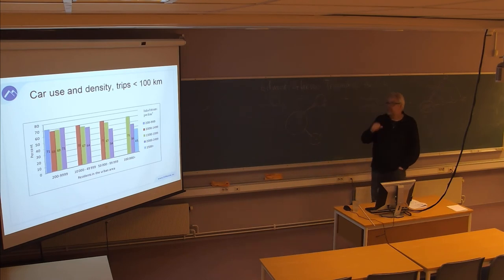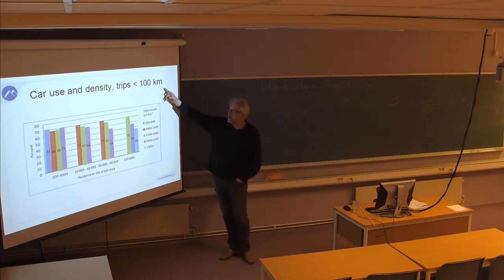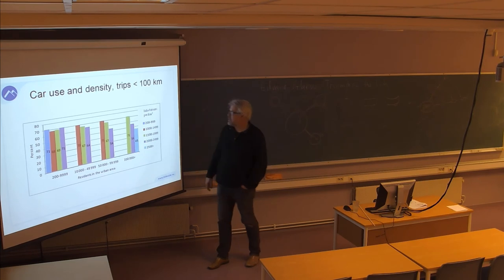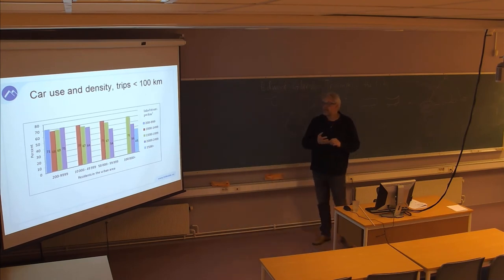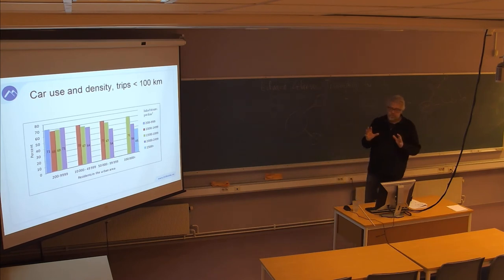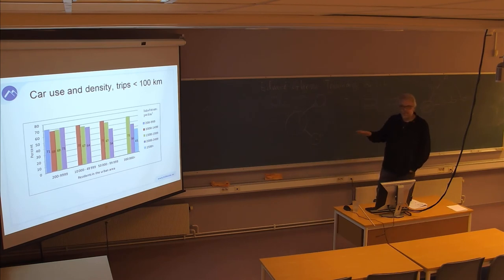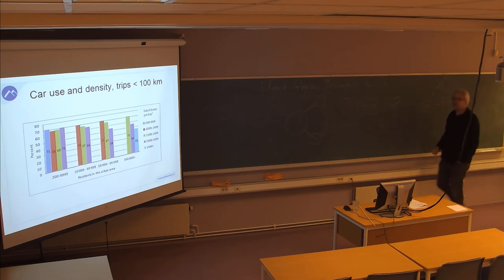This panel shows car use and density for shorter trips — less than 100 kilometers. There is a tendency that as density increases, the percentage of car use decreases. This is just showing that density means better public transport systems. The root cause has to do with urban planning — whether they have been successful in planning the suburbs so that it is possible to serve them with public transport.